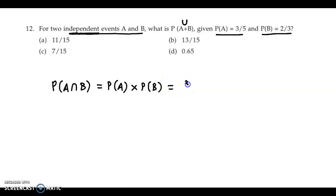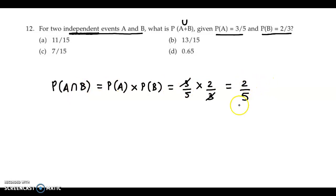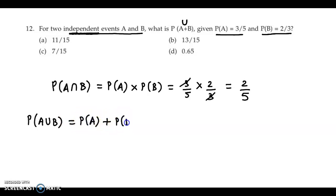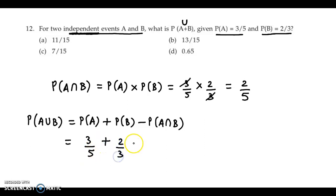Probability of A jo hai woh hai 3/5 and probability of B hai 2/3. Yeh simplify karte hain, toh 3 cancel ho jata hai aur yeh aa jata hai 2/5. Toh intersection ki probability humein mili hai as 2/5. Ab hum easily dhund sakte hain probability of A union B. Addition theorem ke help se: P of A plus P of B minus P of A intersection B. Probability of A is 3/5, B ki probability hai 2/3, aur intersection yeh hai 2/5.